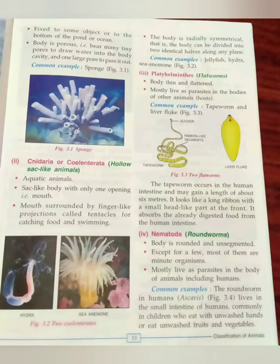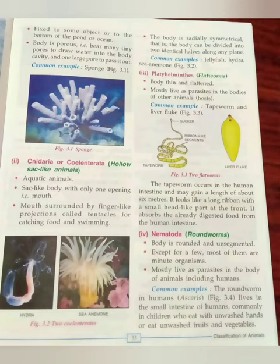Coelenterata — the body is radially symmetrical, meaning the body can be divided into two identical halves along any plane. Common examples are jellyfish and hydra.